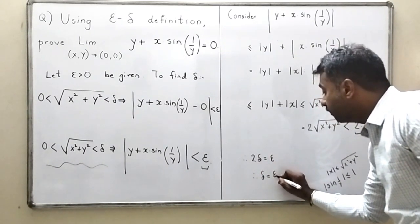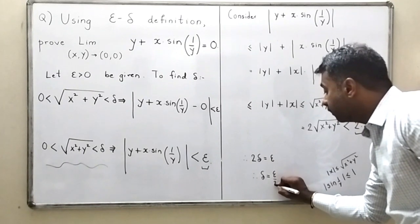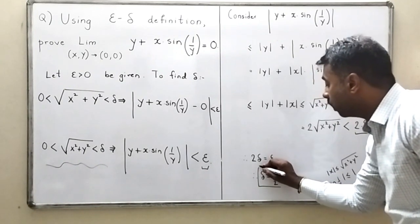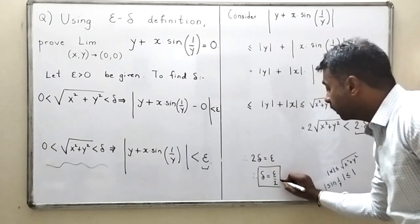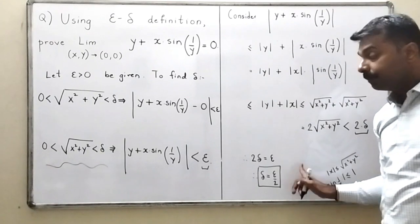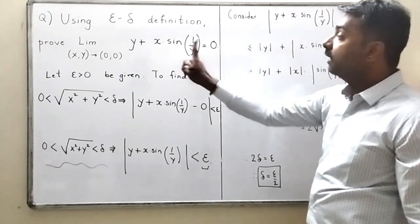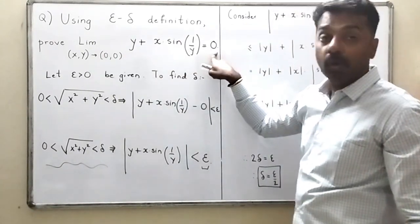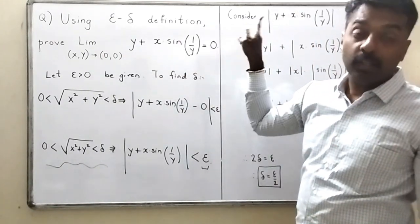So this quantity is less than epsilon from the definition, and when I simplified the left-hand side I got it is less than 2·delta. Therefore 2·delta = epsilon, and so delta = epsilon/2. Once I have found delta = epsilon/2, the limit equals 0 is proved.